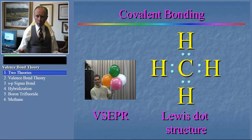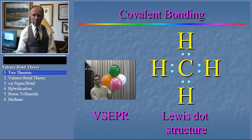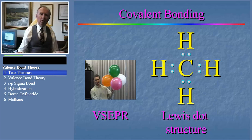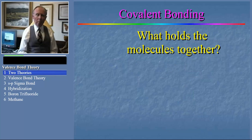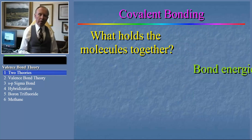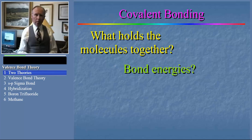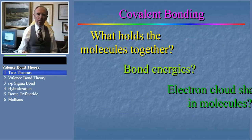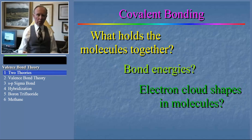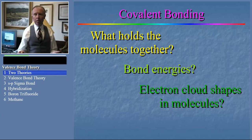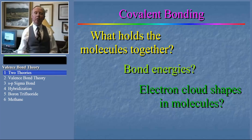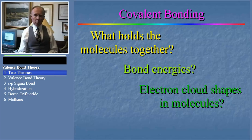But what these theories don't do for us is to explain why the bonds form — that is, what physically holds the molecule together. Nor do they help us predict the energies of the bonds, or how the electron clouds, which are found in atomic orbitals in the individual atoms, reconfigure themselves in the resulting molecule. And it's these latter questions we're going to start tackling in this module.